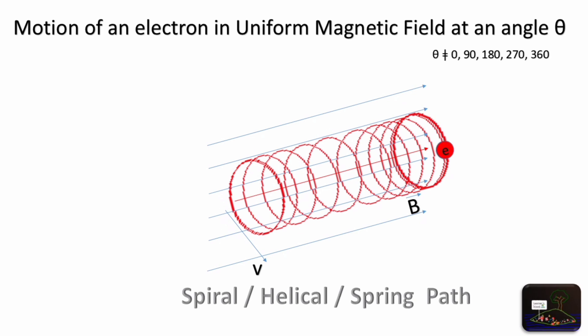The parallel component will cause the particle to move straight while the perpendicular component will make it move circular. These two motions together create a spiral motion, hence an electron will move in a spiral or helical path in a magnetic field at theta.